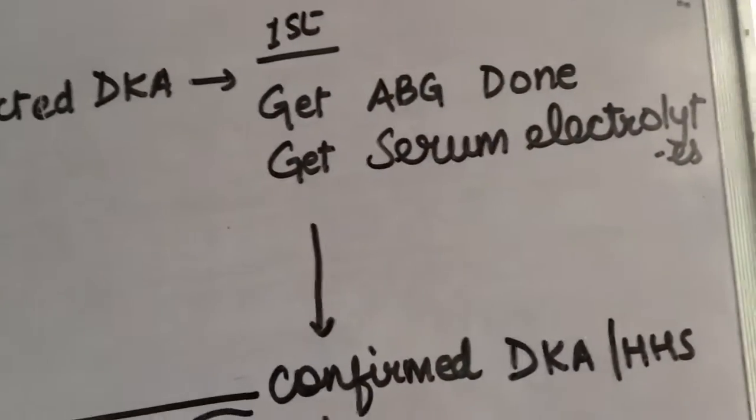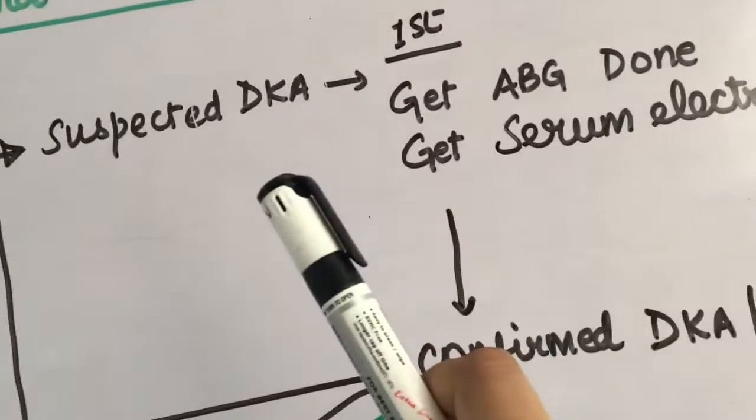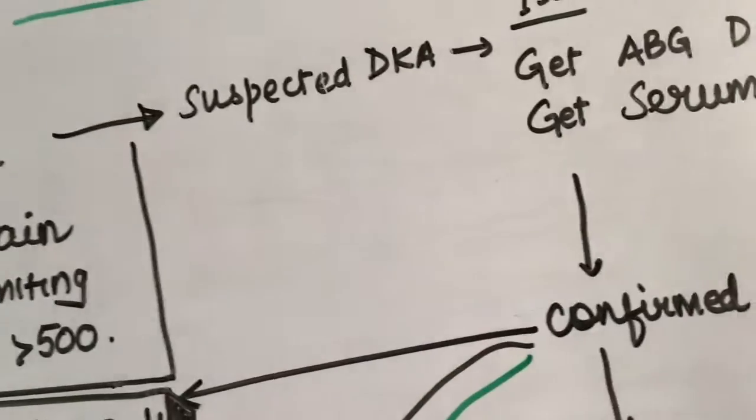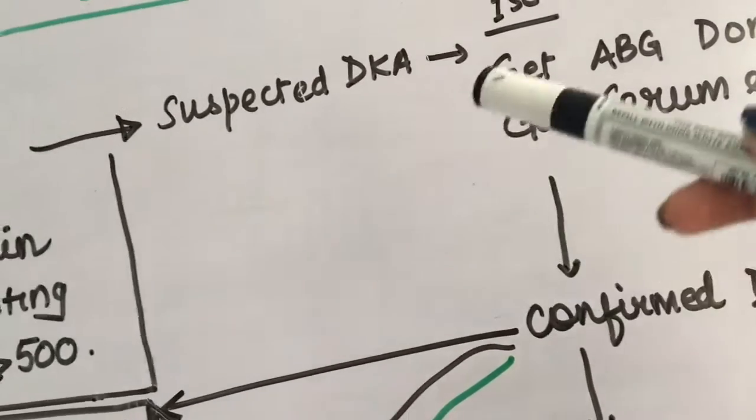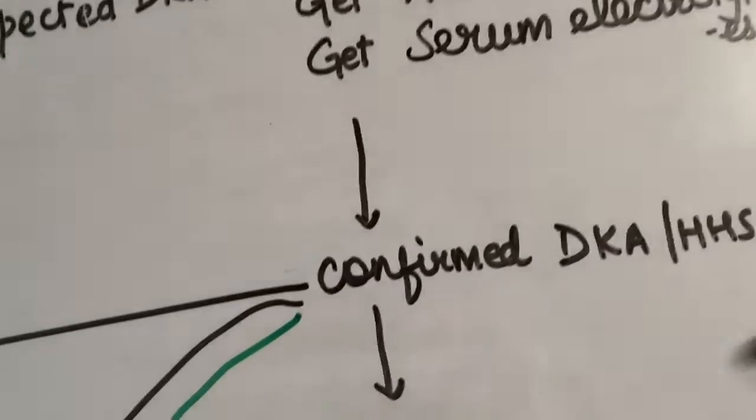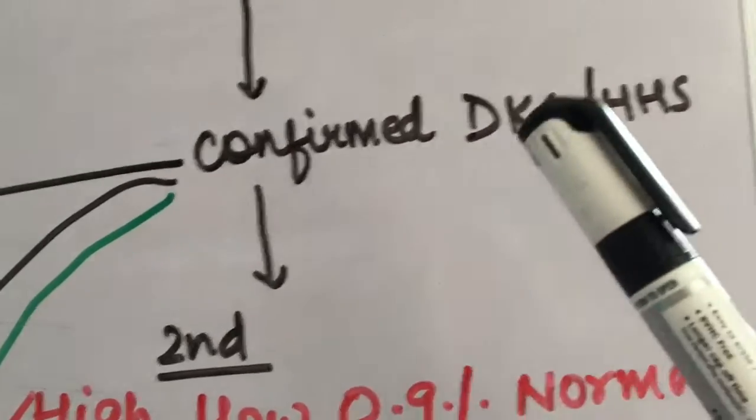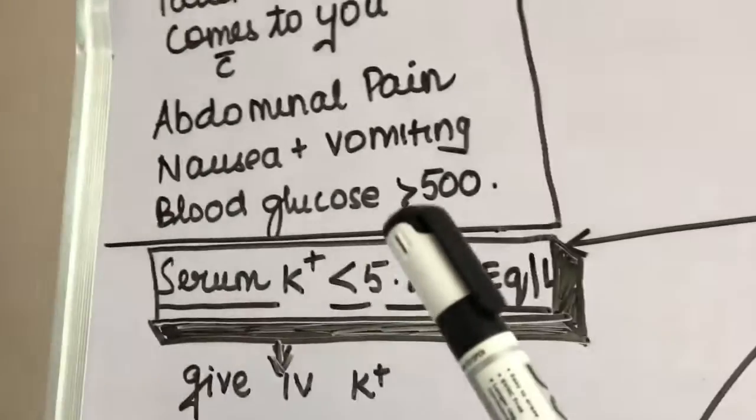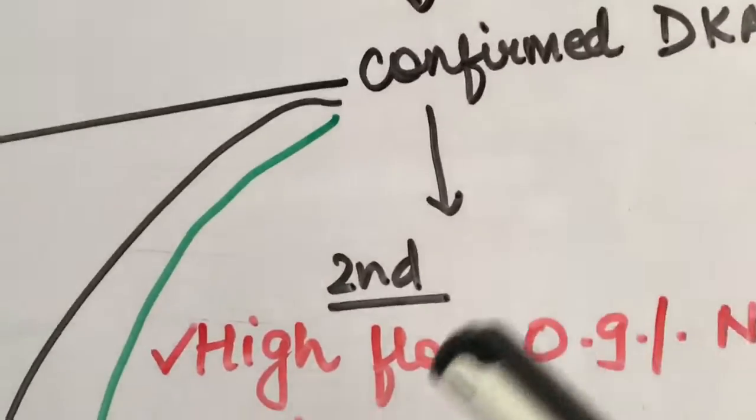You would have a serum electrolyte panel by your side, but to calculate if there is anion gap metabolic acidosis which is very common in these patients because they continuously vomit and there are electrolyte disturbances like hypokalemia and deranged bicarb levels, it is so damn common in this condition. After you have confirmed DKA or HHS through the ABGs and the blood glucose level is already more than 500, that is confirmatory. After that, the second step...